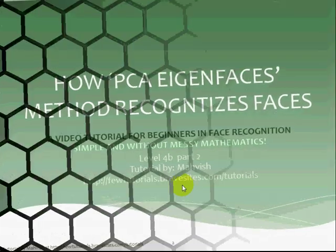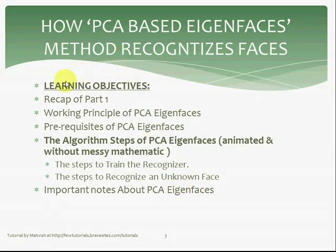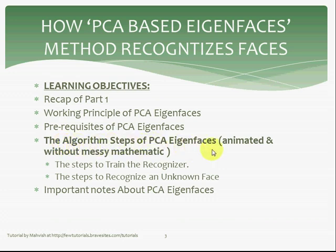Moving on with our learning objectives. The learning objectives of this tutorial will be: first, to recap Part 1 so that you have it fresh in your mind. Then we will move on with the working principle of PCA Eigenfaces in the light of how it recognizes a face, and the prerequisites of PCA Eigenfaces. The major part of this tutorial will consist of the algorithm steps of PCA Eigenfaces, animated for better understanding. The steps will be to first train the recognizer, and the remaining steps will be to recognize the unknown face.